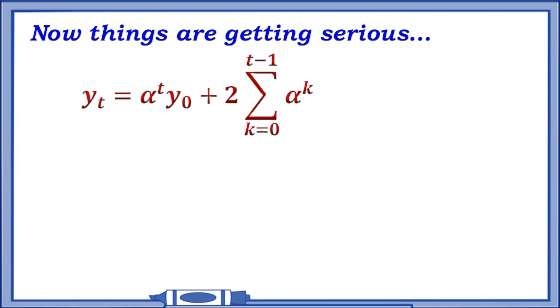Okay, so now things are getting serious. What happens at this stage? So we're not used to seeing this kind of equation. Well, let's consider taking alpha equals 1 for example. What happens to that equation? Well, it's actually quite easy.